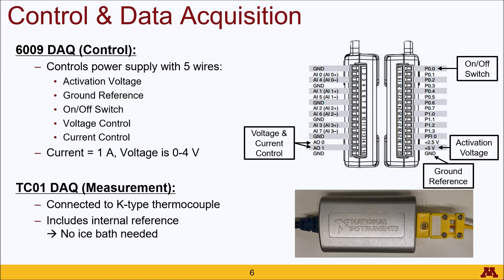The first piece of equipment is the control and data acquisition systems. In this experiment, you will be using two different DACs. The first one, the 6009, which you should be familiar with, acts as the control. The DAC will output five different wires of information to the power supply, including a 5 volt activation, a ground reference, an on/off switch, and a voltage and current control. LabVIEW simplifies calculations by setting the current to a constant 1 amp, while the voltage is varied using the PID control system, so the 0 to 4 volt signal corresponds to a 0 to 4 watt output.